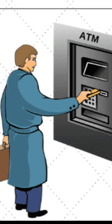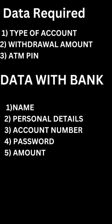But when we put the card in the ATM, we have no idea what operations are happening within the ATM machine. We enter the ATM pin and cash amount to withdraw, but we cannot see how the ATM machine uses this data to search through details and give us the money. This is a most common case of data abstraction.